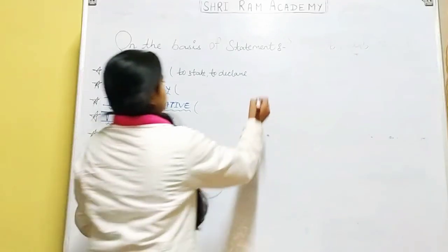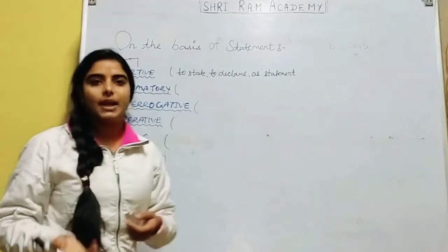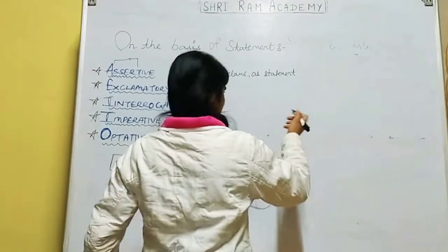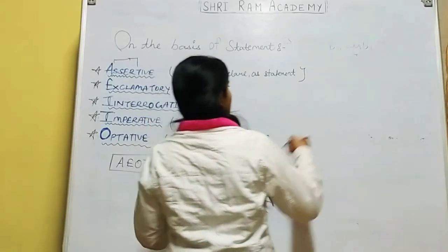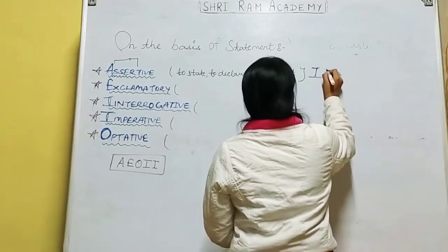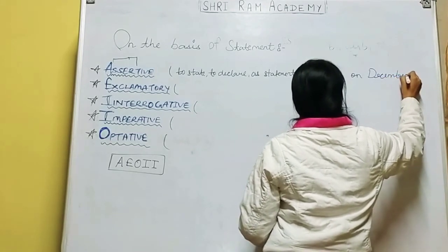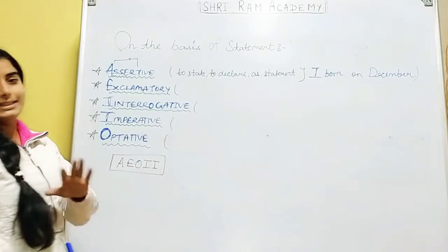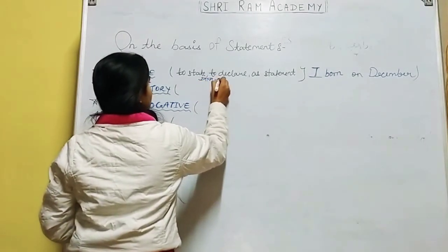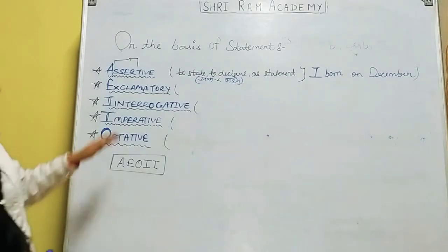Assertive sentences are those which are used as statements to state something. For example, 'What is your name?' — ये statement नहीं है, ये बात पूछ रहा है. But if I say 'I was born in December,' then this is stating something — it is declaring a fact. Simply, वो sentences जो चीजों को clearly state करें, साफ-साफ कह दें — वो assertive sentences होते हैं.